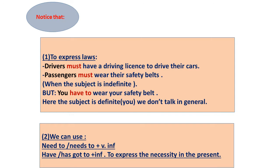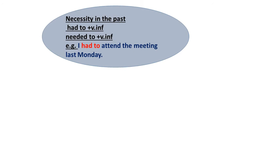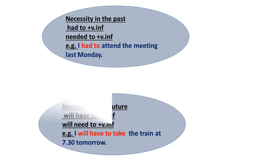We can also use 'need to' plus the infinitive, or 'have / has got to' plus the infinitive to express necessity in the present. To express necessity in the past, we use 'had to' plus the infinitive or 'needed to' plus the infinitive. For the future, we use 'will have to' or 'will need to' plus the infinitive — for example, 'I will have to take the train at seven-thirty tomorrow.'